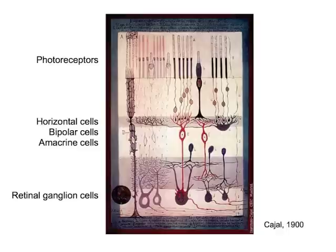These computations converge on the roughly 15 to 20 types of retinal ganglion cells that encode different features of the visual scene.